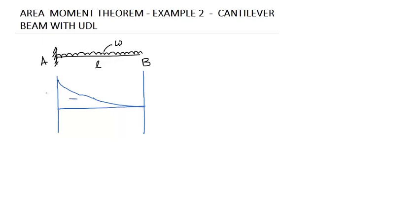It has negative value and its value is wL squared by 2. Since we are drawing M by EI diagram, it is wL squared by 2EI. Let us draw its deflected shape.